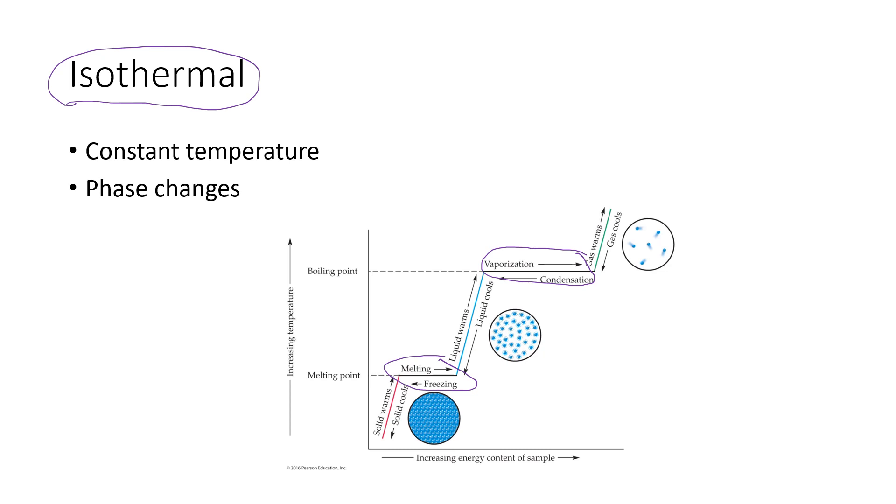And phase changes, in other words, a solid turn into a liquid, liquid turn into a gas, happen at constant temperature. The reason for that is that all of that energy that's being added at that temperature goes into changing the state of matter.